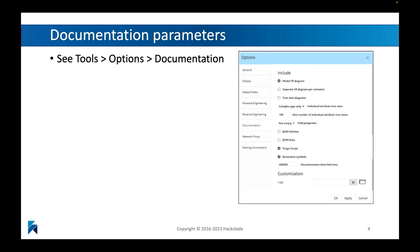In every documentation generation capability, there are going to be some parameters, which you will find in Tools, Options, and then Documentation. For example, one of the potential customizations you can specify there is if you want to put a logo, or anything else — selecting what you want to include in your documentation generation.